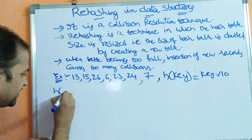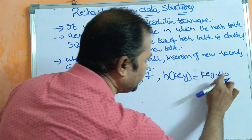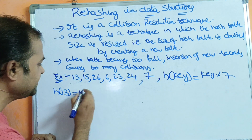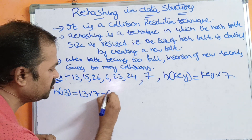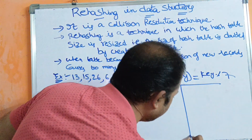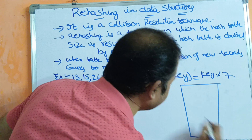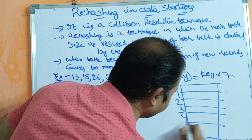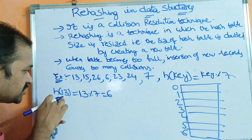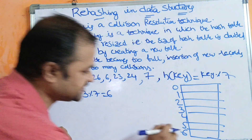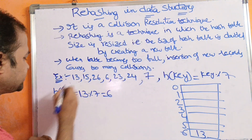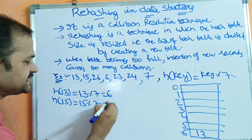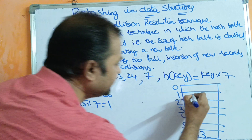The first key is 13. H(13) = 13 modulo 7 = 6, so we store 13 at index 6. Next, H(15) = 15 modulo 7 = 1, so we store 15 at index 1. Next, H(26) = 26 modulo 7: 7 threes are 21, so 26 minus 21 = 5. We store 26 at location 5.